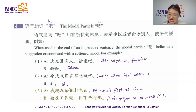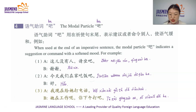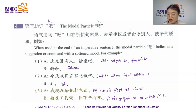Number three: 我现在给他打电话。 现在 means 'now,' 打电话 means 'make a phone call,' 给他 means 'to her.' So 'I call her now.' — 他在工作呢 — 'She is working.' — 你下午打吧 — 'Call her in the afternoon.'